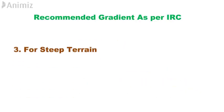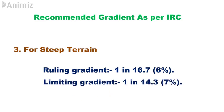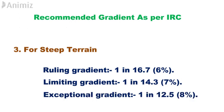3. For Steep Terrain: Ruling gradient is 1 in 16.7, i.e., 6%. Limiting gradient is 1 in 14.3, i.e., 7%. Exceptional gradient is 1 in 12.5, i.e., 8%.